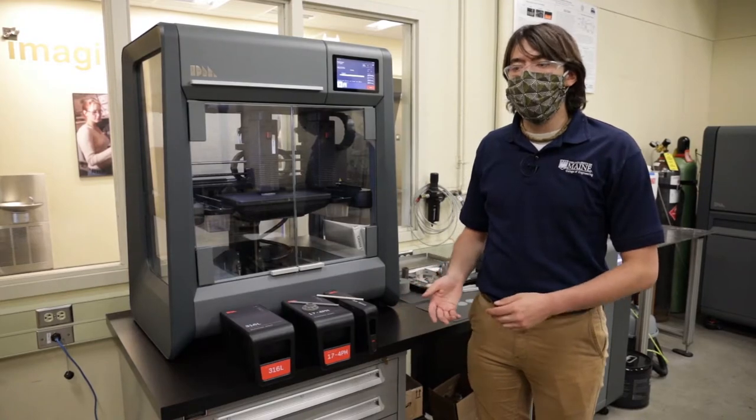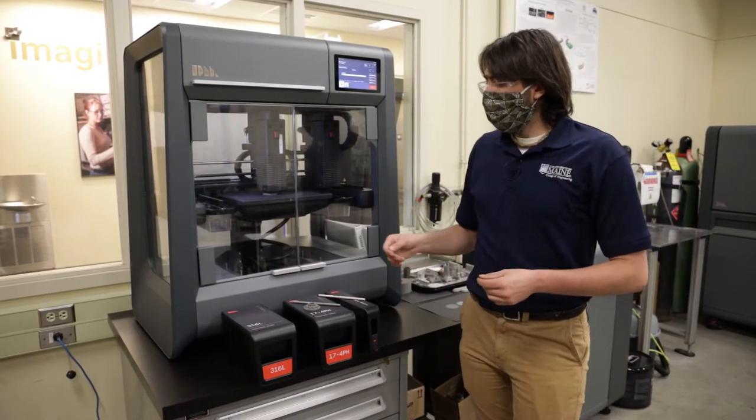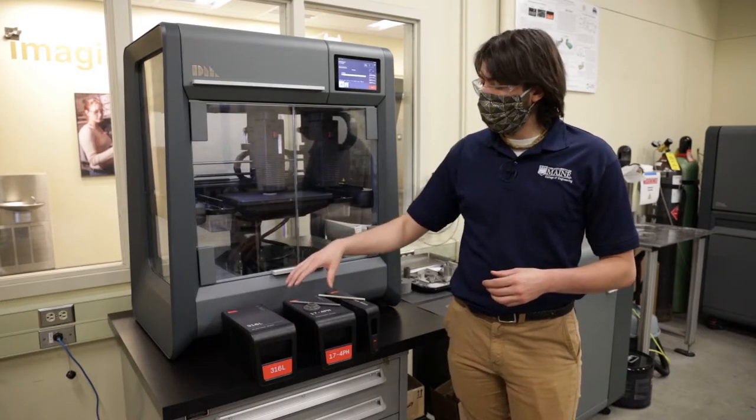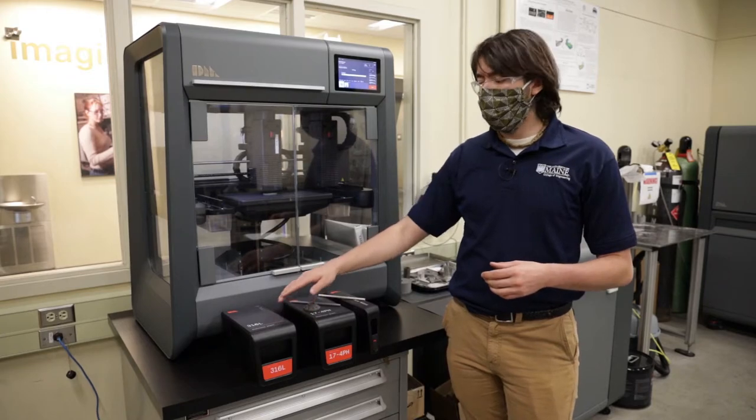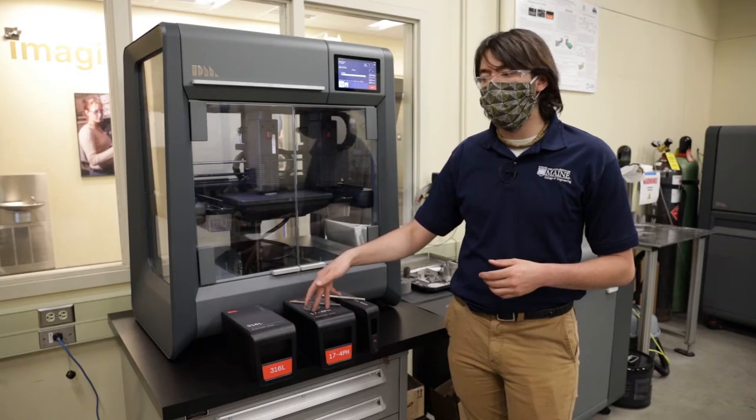The raw material for the printer comes in cartridges like these. The main materials that we have for printing with are these two different types of stainless steels: 316L stainless steel and 17-4 PH stainless steel.